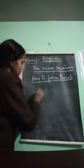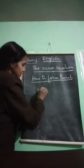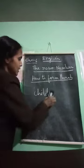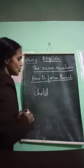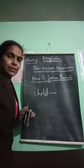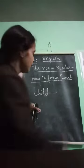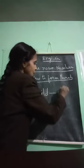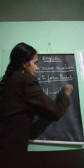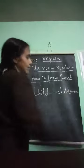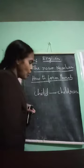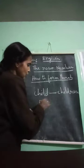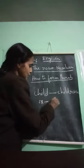Some nouns have irregular plurals. For example: child — the plural is children. Ox — the plural is oxen.